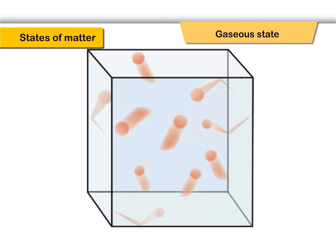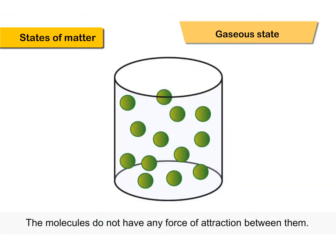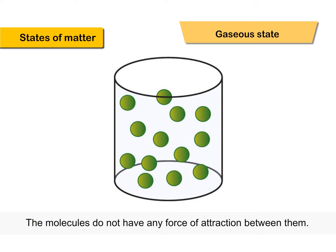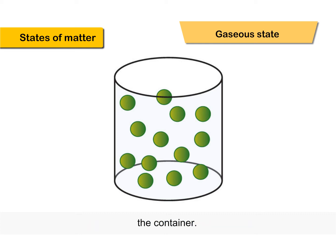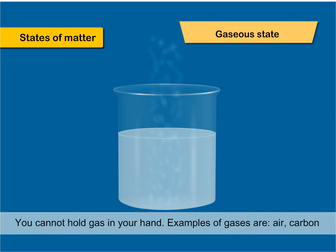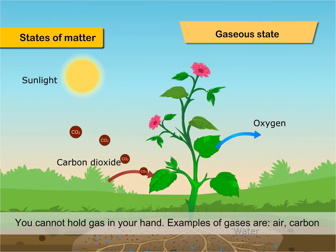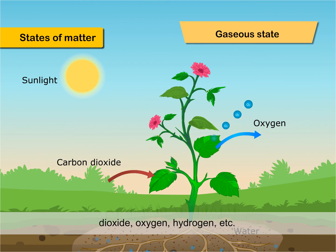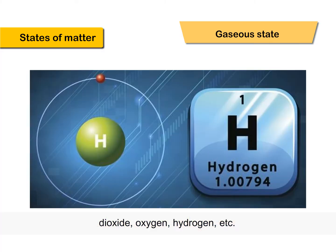Gaseous State: The molecules in a gas are very loosely packed and far apart from each other. Gases do not have definite volume or definite shape. The molecules do not have any force of attraction between them. Gases can occupy the whole of the space and take up the shape of the container. You cannot hold gas in your hand. Examples of gases are air, carbon dioxide, oxygen, hydrogen, etc.